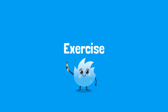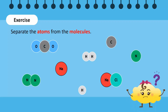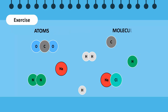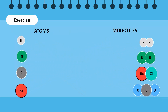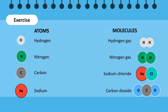Time for an exercise. Let's see if you remember the difference between an atom and a molecule — separate the atoms from the molecules. Let's see how you did. Hydrogen, nitrogen, carbon, and sodium are all types of atoms. Hydrogen gas, nitrogen gas, sodium chloride, and carbon dioxide are molecules.